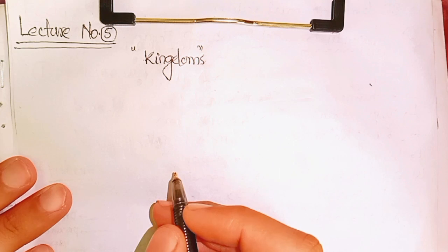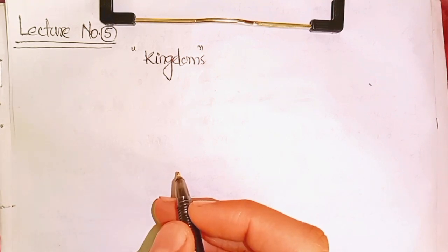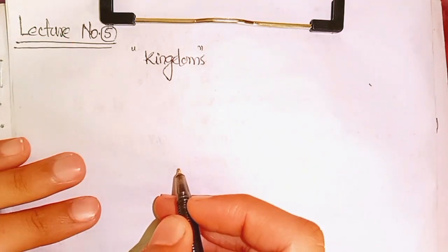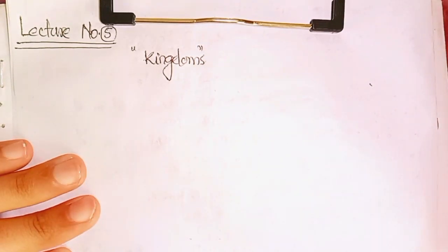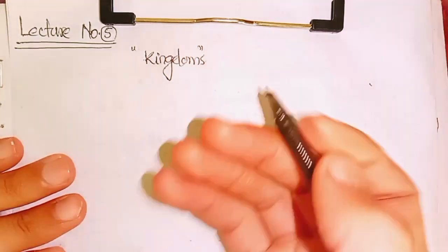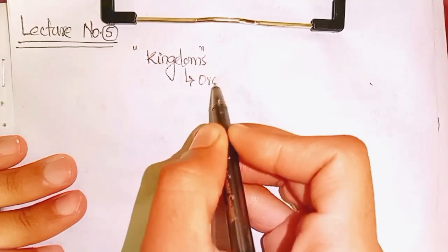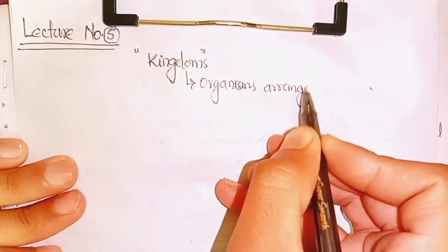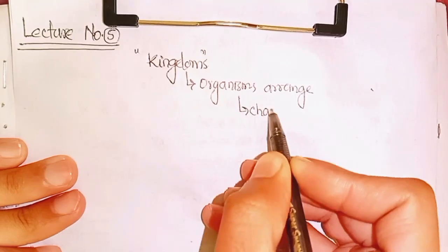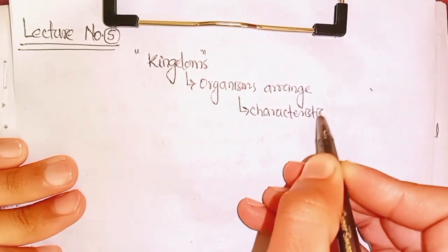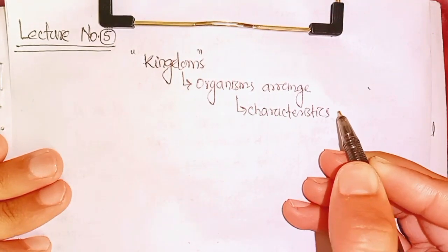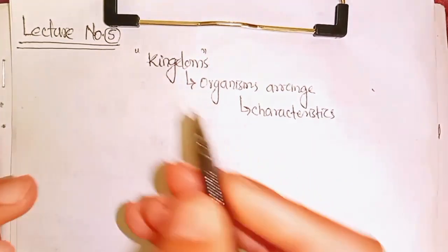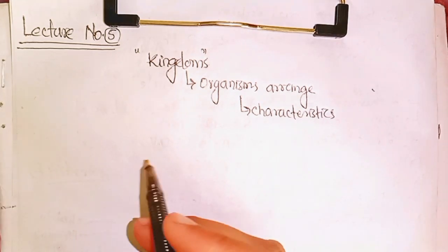The Five Kingdoms System. In the previous class we covered careers in biology. Now, if you have a lecture about the kingdoms — The Five Kingdoms System covers all the different kinds of organisms. Organisms are arranged, and the highest arrangement among us is Kingdom.